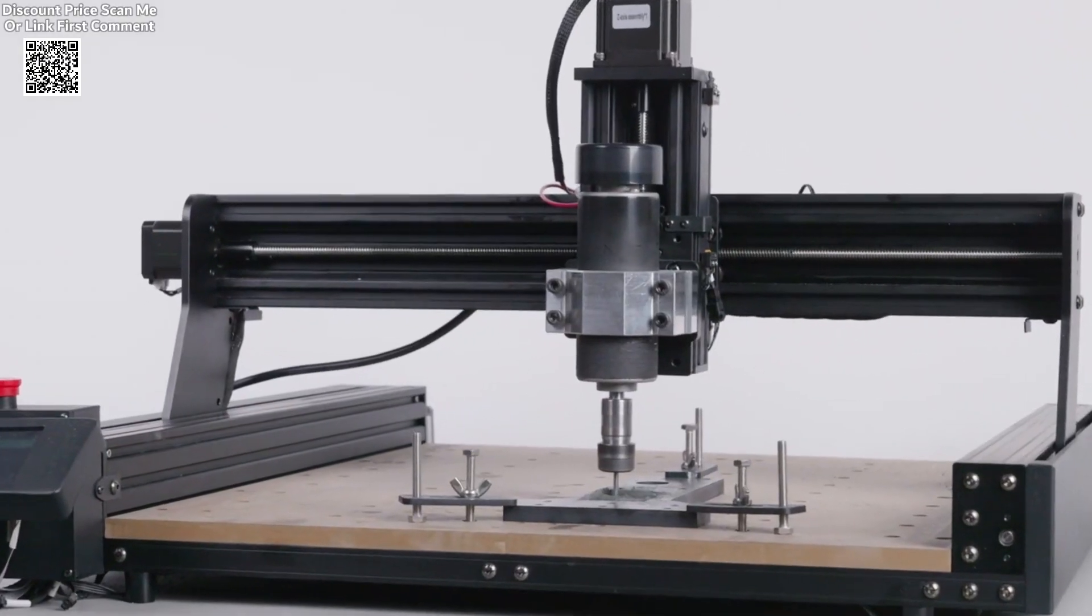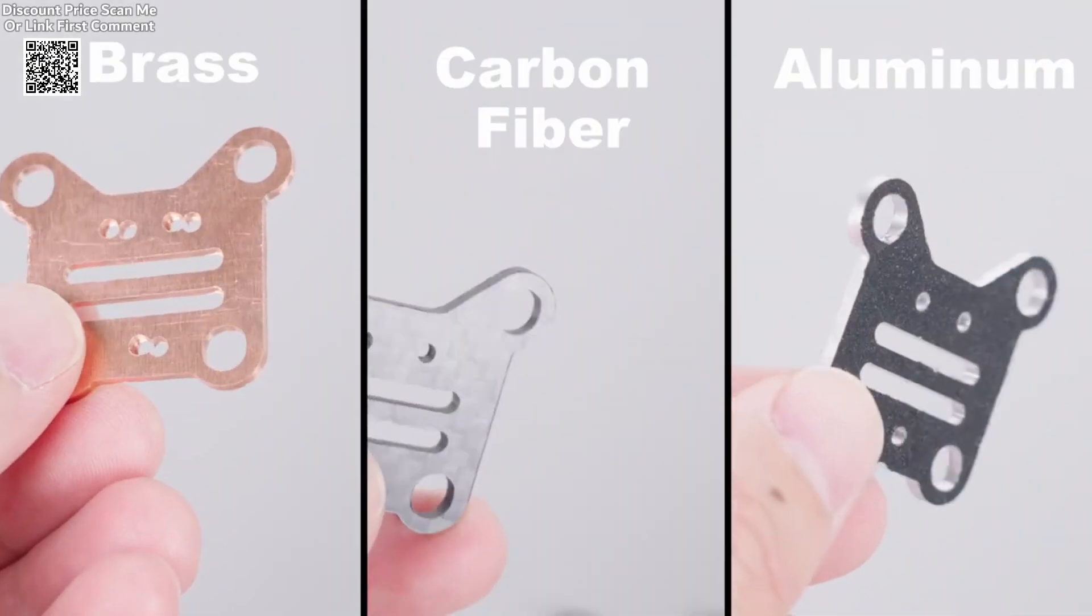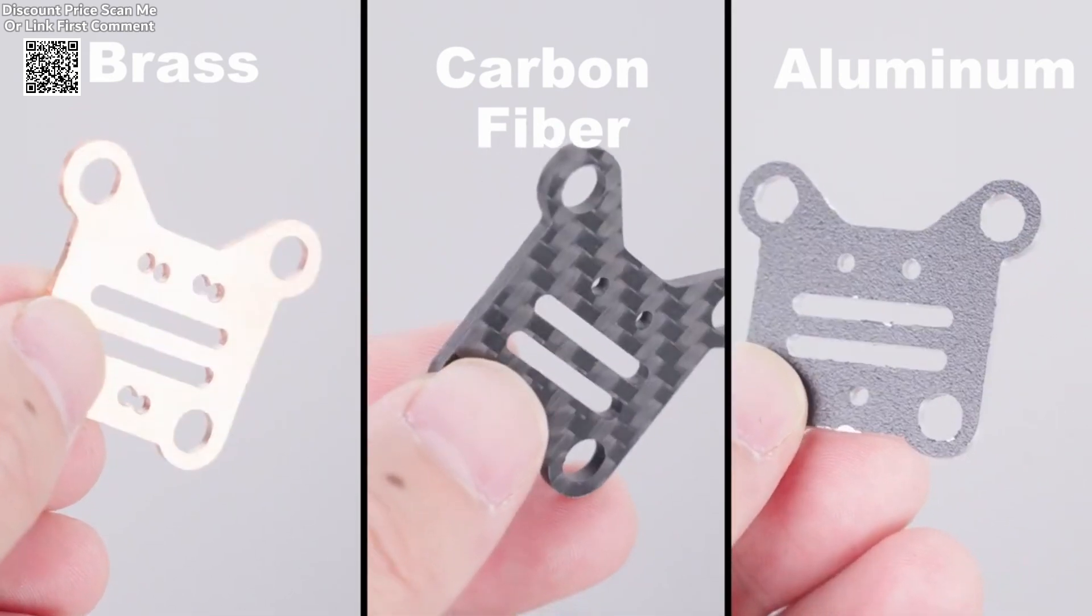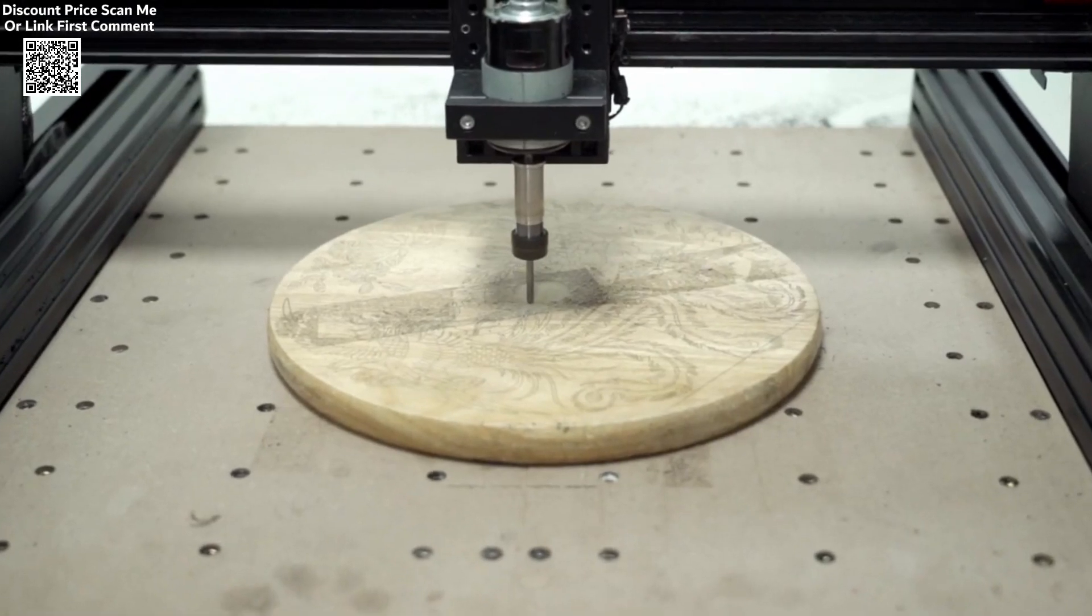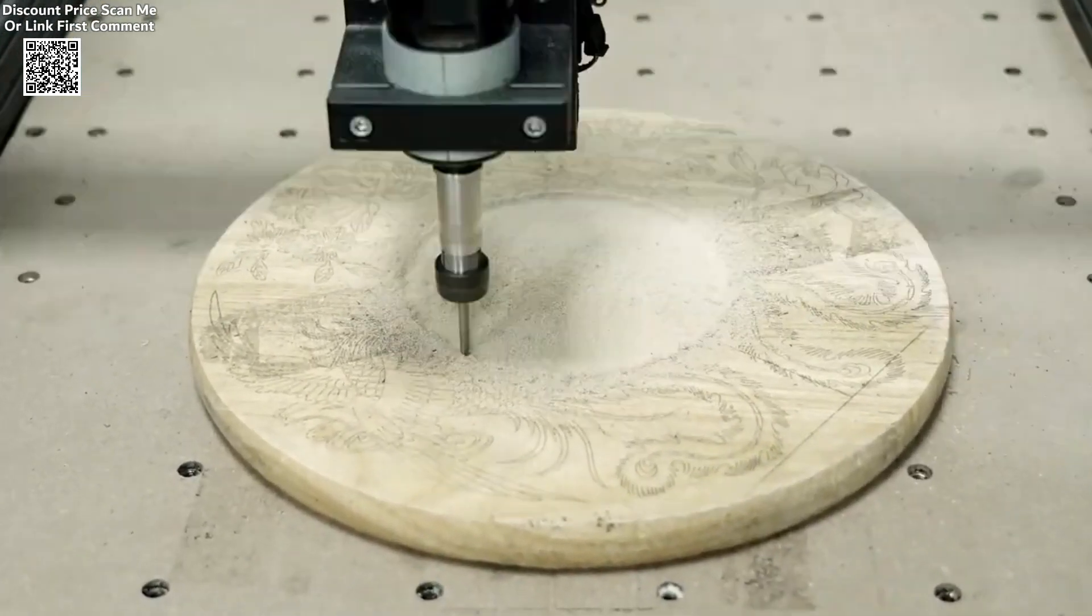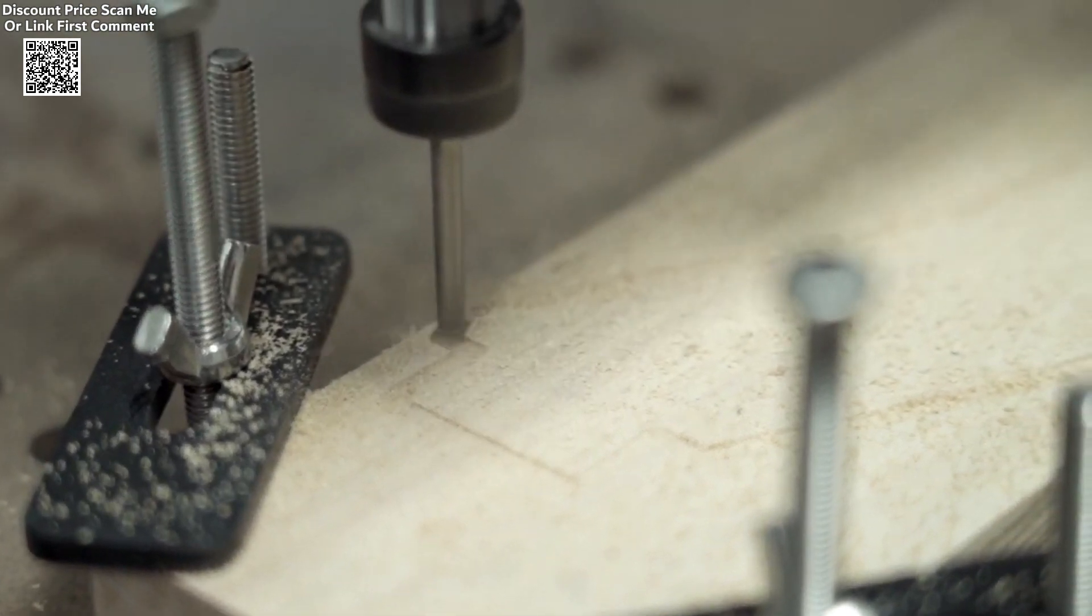This level of accuracy makes the TTC450 suitable for a variety of materials, including stainless steel, wood, aluminum, brass, plexiglass, leather, PCB, MDF, acrylic, resin, nylon, carbon fiber, PVC, and more.